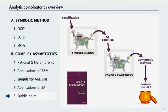Today we're going to talk about saddle point asymptotics, which is where we turn to estimate coefficients for generating functions that have no singularity. This is the final step in complex asymptotics — the last way to get a quick asymptotic estimate of generating function coefficients according to our standard overview.